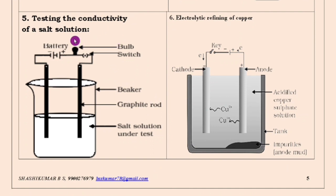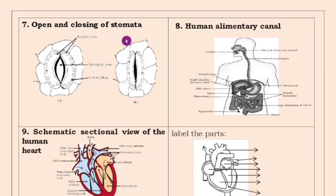Testing the conductivity of a salt solution and electrolytic refining of copper — practice these two diagrams thoroughly. Now it comes to biology. When it comes to biology, you will face some difficulty because some diagrams are difficult. But when you practice, it will be easy. In physics and chemistry, you can draw using a scale and pencil easily, but in biology you should give the definite shape so that the diagram looks like a perfect picture. I will explain in future how to draw the heart diagram and brain diagram easily.